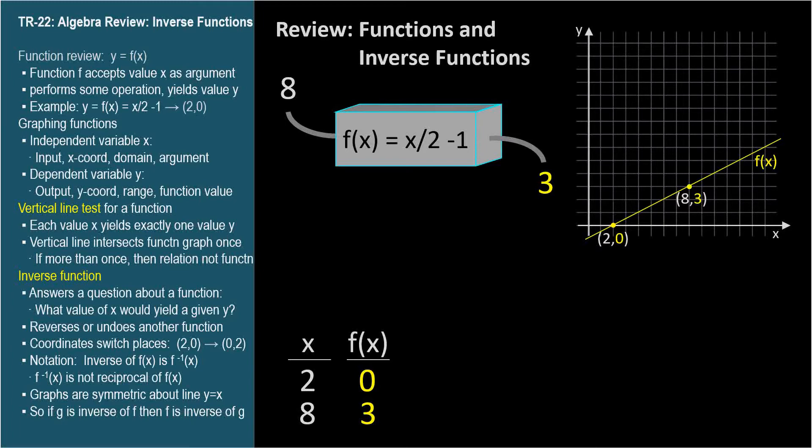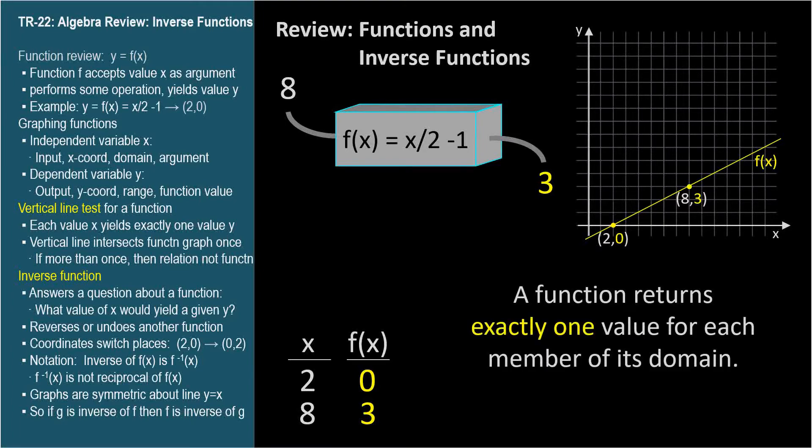A function must return exactly one value for each member of its domain. So if I took an input x value of 5, for example, and my imaginary box generated two different numbers for it, say 1 and 7, then the box would not represent a mathematical function. It would be a mathematical relation, which is fine, but it's not a function.